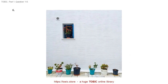Number 6. Look at the picture marked number 6 in your test book. A. The fence is being painted. B. Some leaves are scattered on the ground. C. An outdoor area is wet after the rain. D. The plants are lined up against the wall.